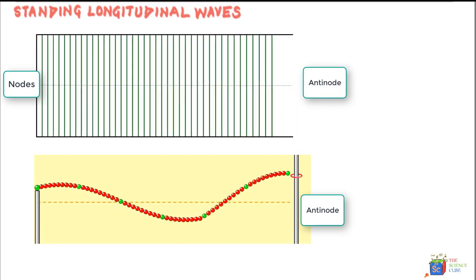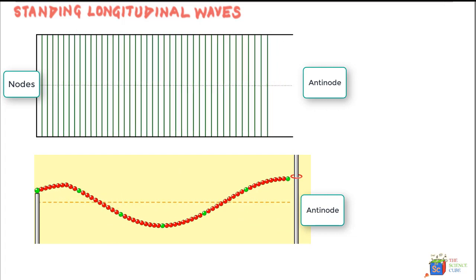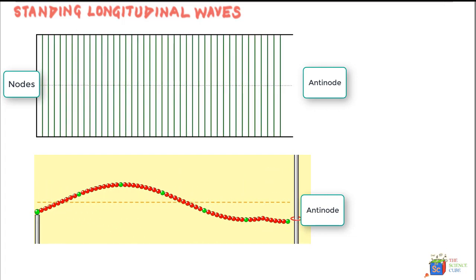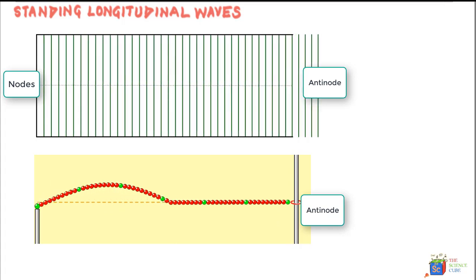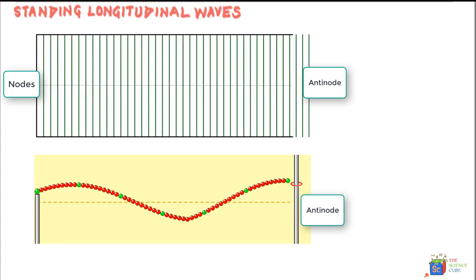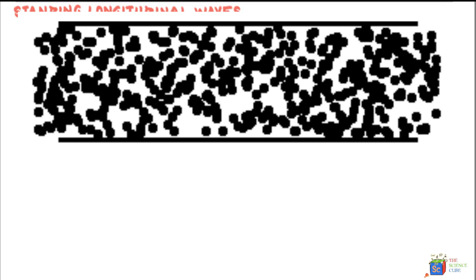So let us start by studying standing waves in a pipe that has two open ends. So if you take a magnified version of the molecules vibrating in a pipe that is open at both ends, the molecules, as they move back and forth, would look something like this.